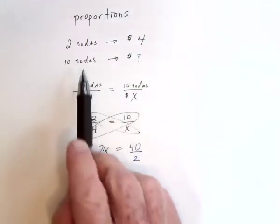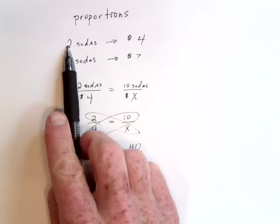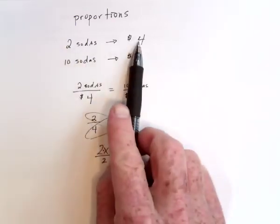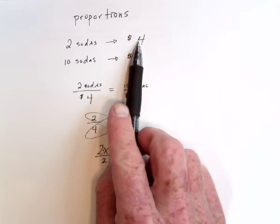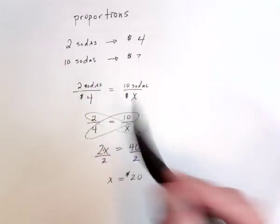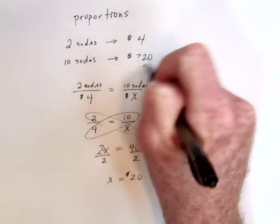Which makes sense, that's what I got before when I said two sodas is four bucks, that means these sodas cost two dollars a piece. If they cost two dollars a piece and you're getting ten of them, well that's going to be twenty dollars.